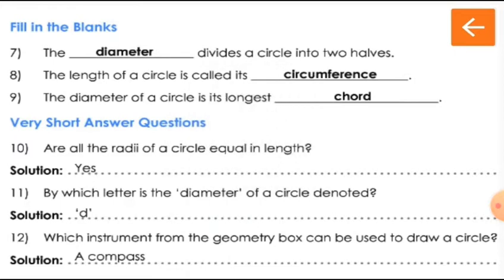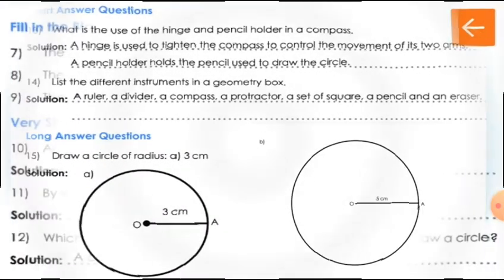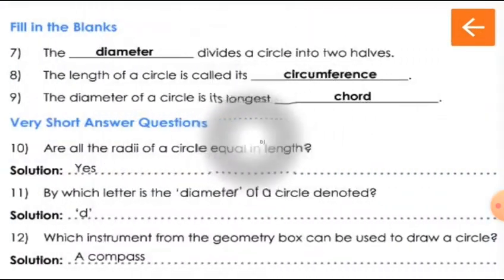Now the 12th question: Which instrument from the geometry box can be used to draw a circle? We can use a compass to draw a circle. So the answer is compass.